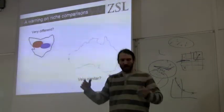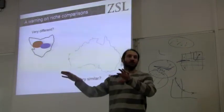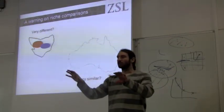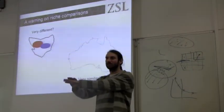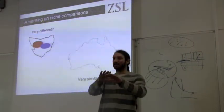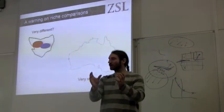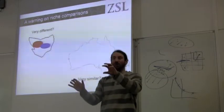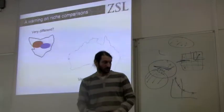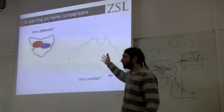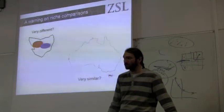You could have a thought experiment where you've got two species on two different islands. On one island their niche looks exactly the same, and on a different island their niche looks different just because the environmental space available on those two islands isn't the same. So it's important to keep in mind the flaws in this sort of approach.